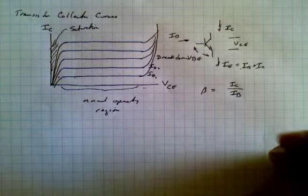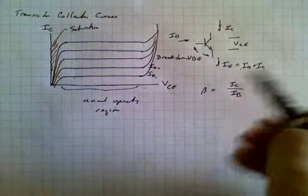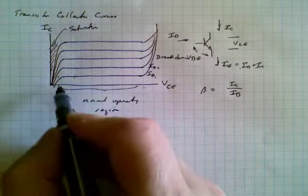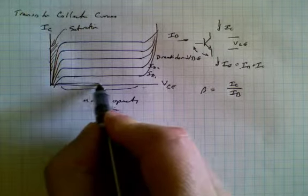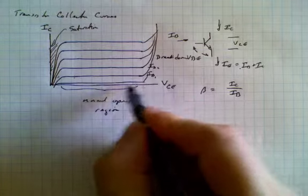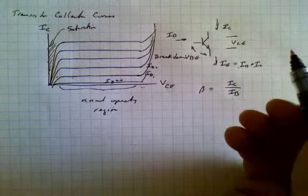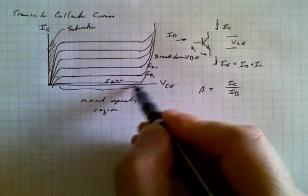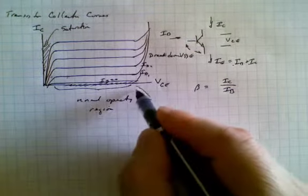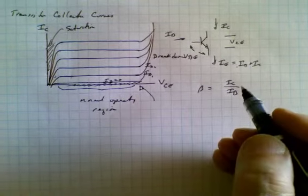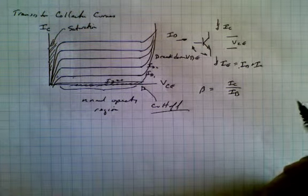Now it turns out also that if we have a base current of zero, no base current here, there will be some leakage through here. So in fact there is a curve which occurs right down here when IB is equal to zero. And that region over here, where there is no current flowing in the transistor at all, is when the transistor is off, and we call that simply cutoff. The transistor is cutoff, it's not working.